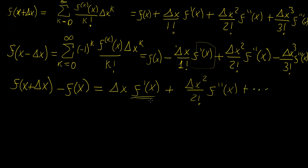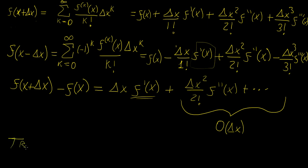Since we only want the first derivative, we group all the extra higher-order terms together and represent them as a big O of delta x. This is called truncation — taking an infinite series and removing the higher-order terms because if you choose a small enough step size, as the power of delta x increases, those terms become negligible.